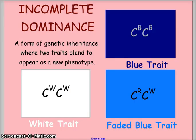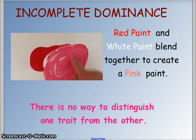Incomplete dominance is a situation where genetic inheritance is a blending of two traits to create a new phenotype. If we have a blue trait and a white trait and we combine them, we get a faded blue — you can't see the blue or white anymore; they blend into a new combination. Think of this like mixing paint: if you take red paint and white paint and blend them to create pink paint, you cannot distinguish the red from the white any longer.